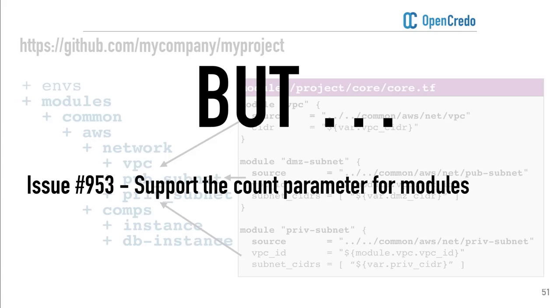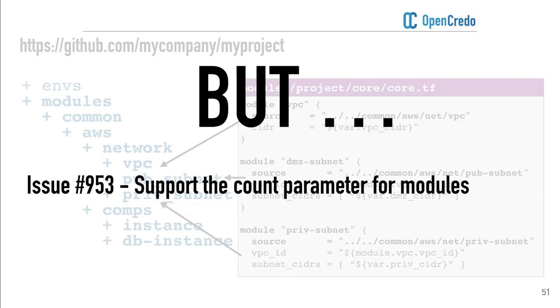There is a current issue in Terraform which prevents you from fully taking advantage of this — the ability to support a count parameter for modules. As some of you are aware, for resources you can typically say 'I want five of these instances' and Terraform will create that for you. Unfortunately, you can't do that for modules — you can't say 'I want five of this module' and have it created on the fly. So in your environment Terraform file, you end up having to duplicate those module definitions. If you wanted three private subnets, you'd literally have to define the module three times.